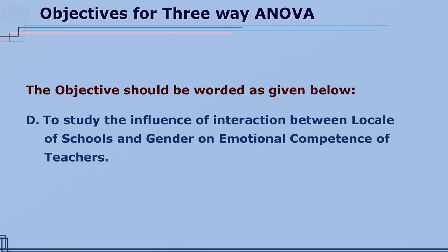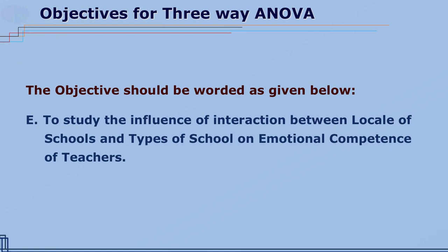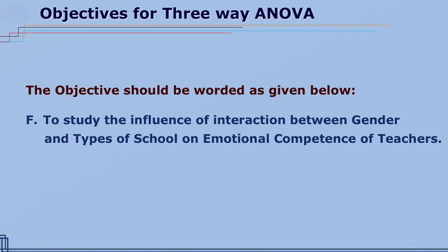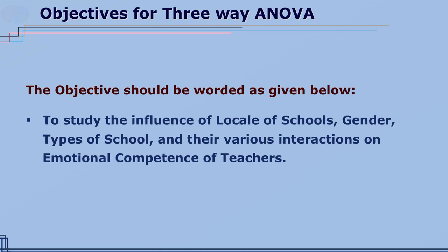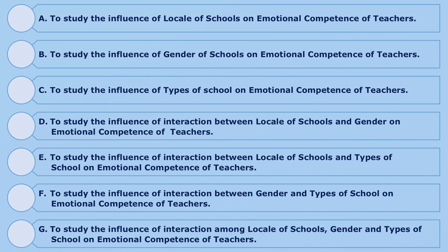D) to study the influence of interaction between locale of schools and gender on emotional competence of teachers; E) to study the influence of interaction between locale of schools and types of school on emotional competence of teachers; F) to study the influence of interaction between gender and types of school on emotional competence of teachers; G) to study the influence of interaction among locale of schools, gender and types of school on emotional competence of teachers. So you can write one objective or seven objectives for the three-way ANOVA.